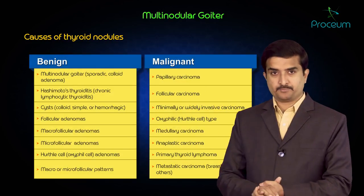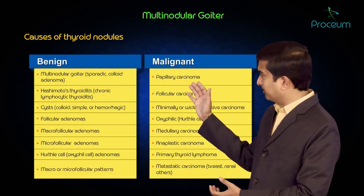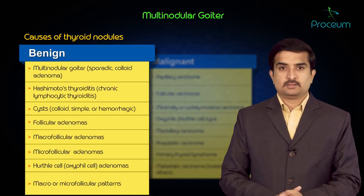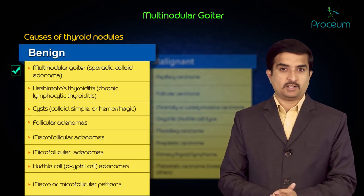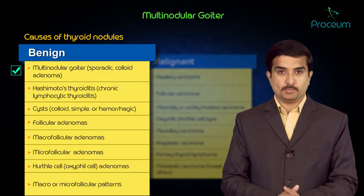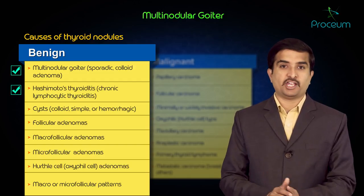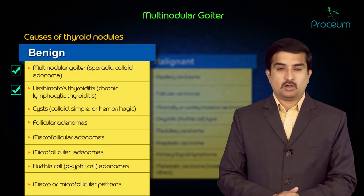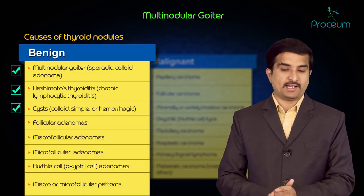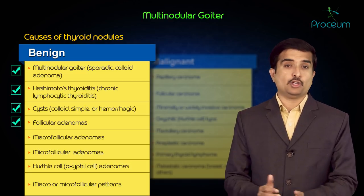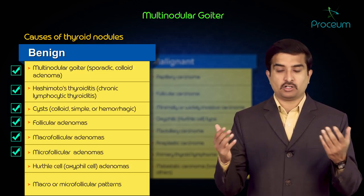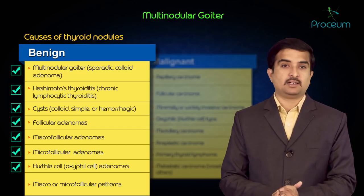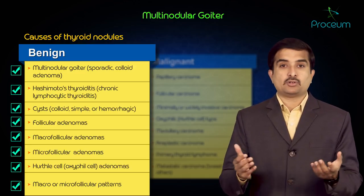Before discussing multinodular goiter in detail, let us discuss the various causes of thyroid nodules. There are benign as well as malignant causes, as seen in this table. On the benign side: multinodular goiter (sporadic), also called colloid adenoma; Hashimoto's thyroiditis, which is chronic lymphocytic thyroiditis; cysts, which may be colloid, simple, or hemorrhagic; and follicular adenomas including macro-follicular, micro-follicular, and Hurthle cell (also called oxyphil cell) adenomas.